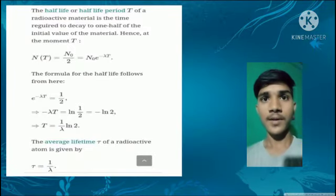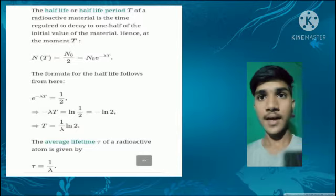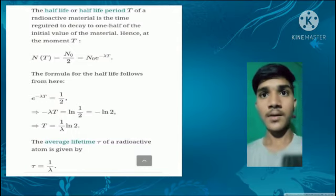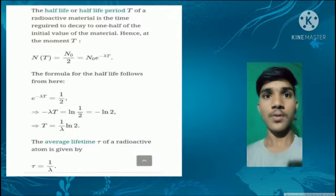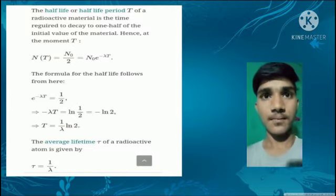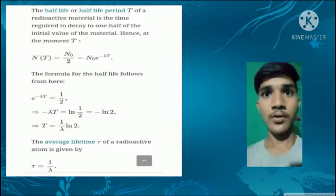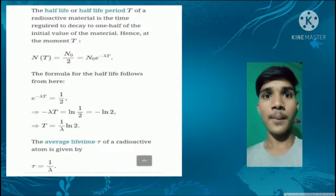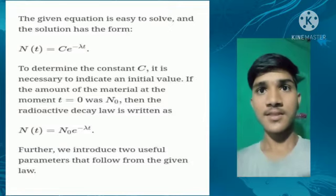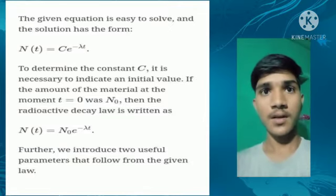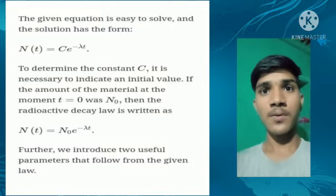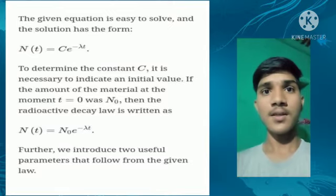The half-life period T of a radioactive material is the time required for the material to decay to one half of its initial value. The given equation is easy to solve, and the solution has the form shown below. To determine the constant C, it is necessary to indicate an initial value. If the amount of material at moment T = 0 was N₀, then the radioactive decay law is written as N(T) = N₀ × e^(−λT).